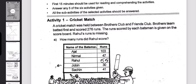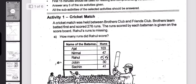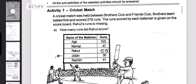A cricket match was held between Brothers Club and Friends Club. Brothers Club batted first and scored. The runs scored by each batsman is given on the scoreboard. Rahul's runs are missing. How many runs did Rahul score? Ajal scored 103, Nirmal scored 47, Jobin scored 30, Sachin scored 47.